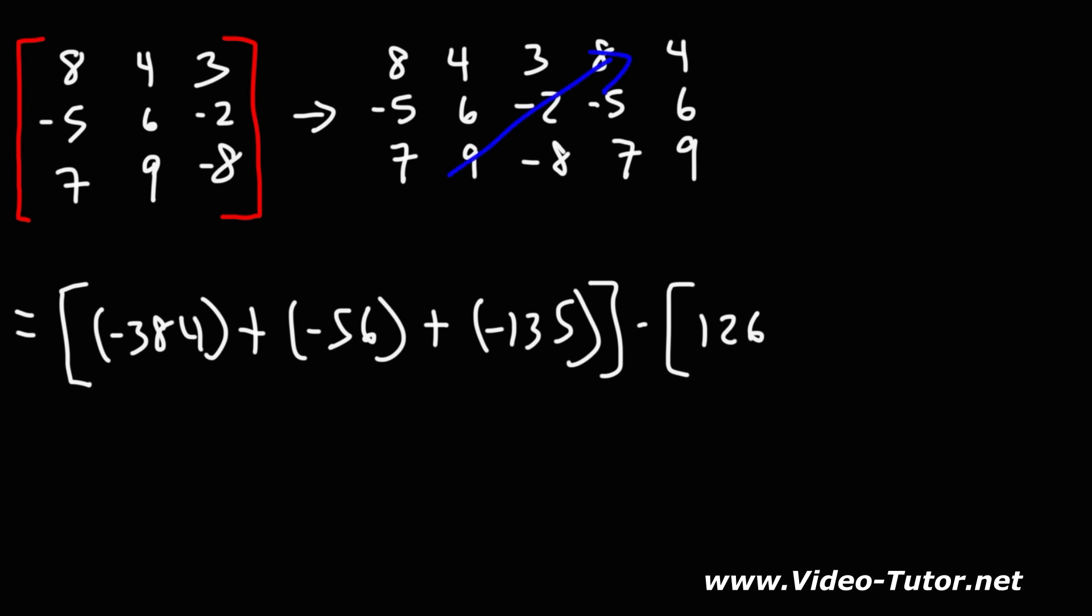9 times negative 2 is negative 18 times 8. 9 times 8 is 72, 72 times negative 2. If you double 72, it's 144, so we're going to have negative 144. And then negative 8 times negative 5, that's positive 40. 40 times 4: 4 times 4 is 16, so 40 times 4 is 160.